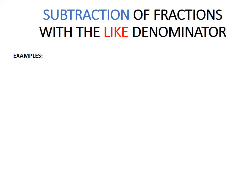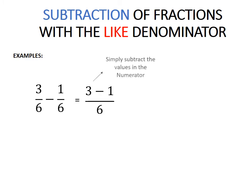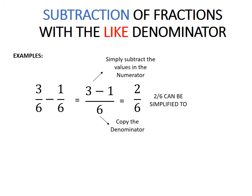Subtraction of fractions with like denominators. This follows the same process as addition with like denominators. Example: 3 over 6 minus 1 over 6. Simply subtract the values in the numerator — 3 minus 1 — and copy the denominator. The answer is 2 over 6. 2 over 6 can be simplified to 1 over 3, because 2 divided by 2 equals 1 and 6 divided by 2 equals 3. So the final answer is 1 over 3.